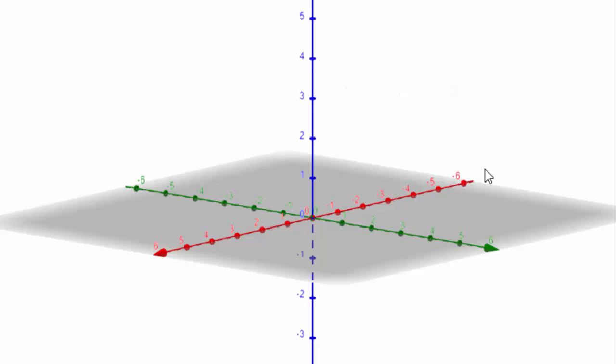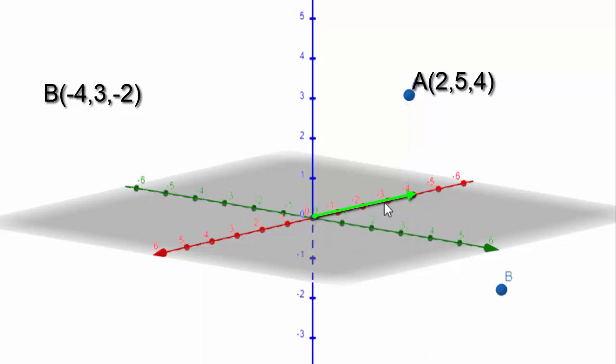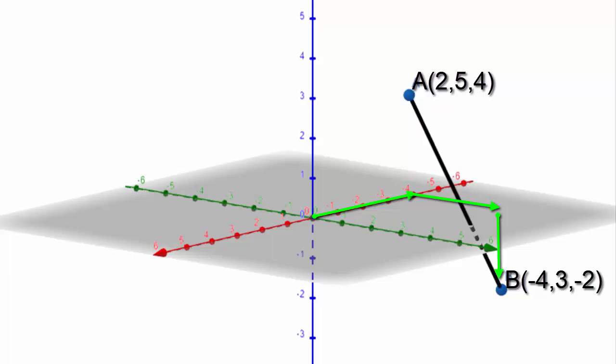All right, let's see how we can plot it. We have 2 on the x-axis, 5 on the y-axis and 4 for the z-axis. So our point A will be here. You can see how we have 4 up, we are 2 to the front and 5 to the side. Our point B which is negative 4, 3 negative 2, so that will be negative 4 will be back here, 3 this way and then 2 down.